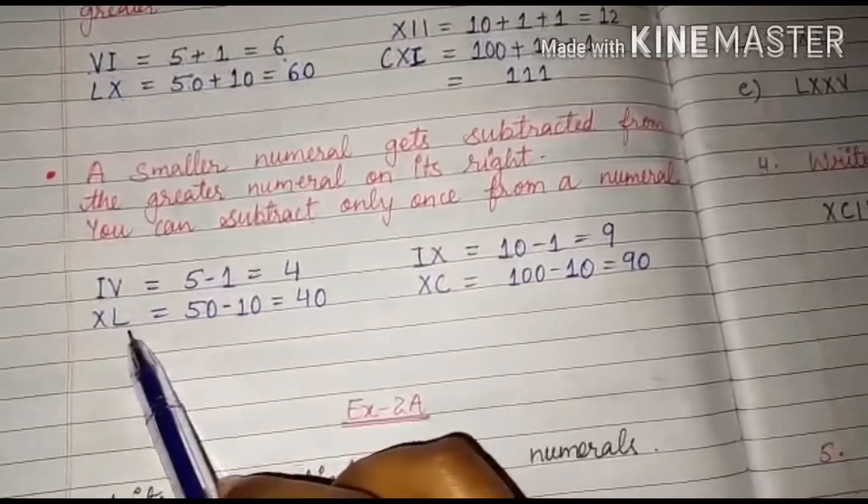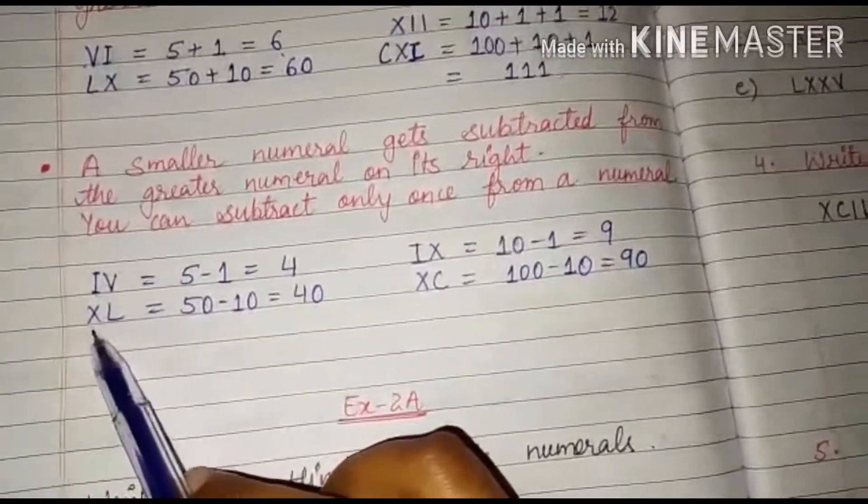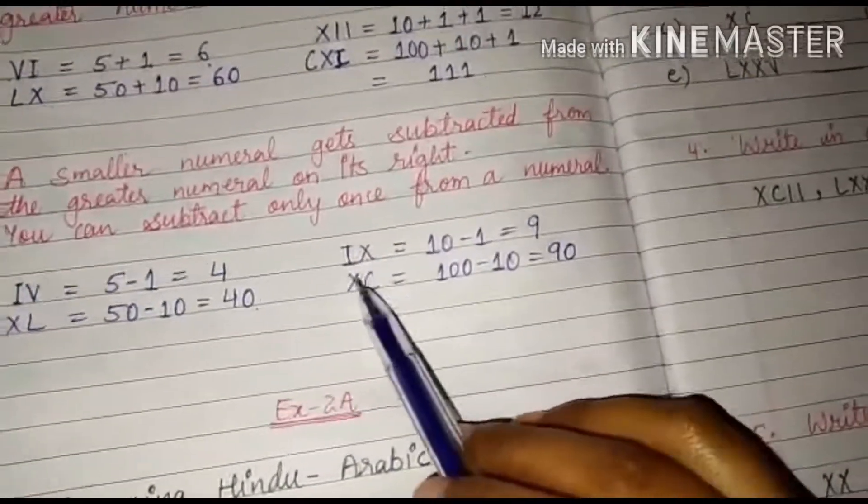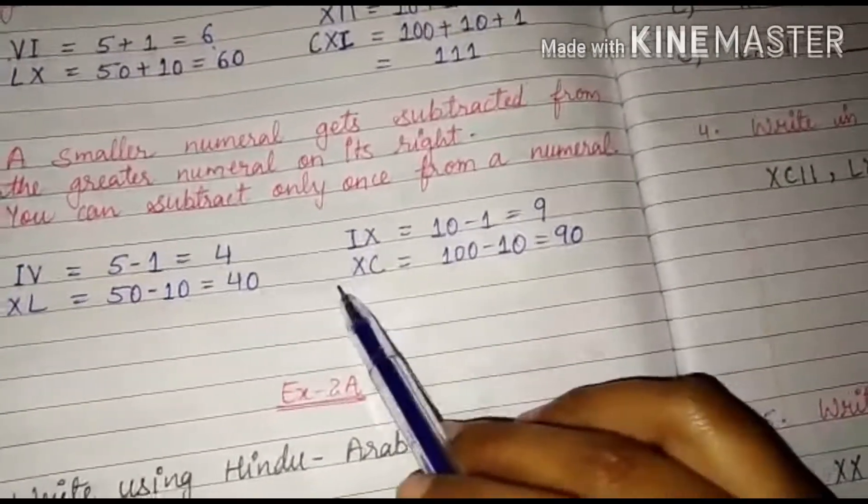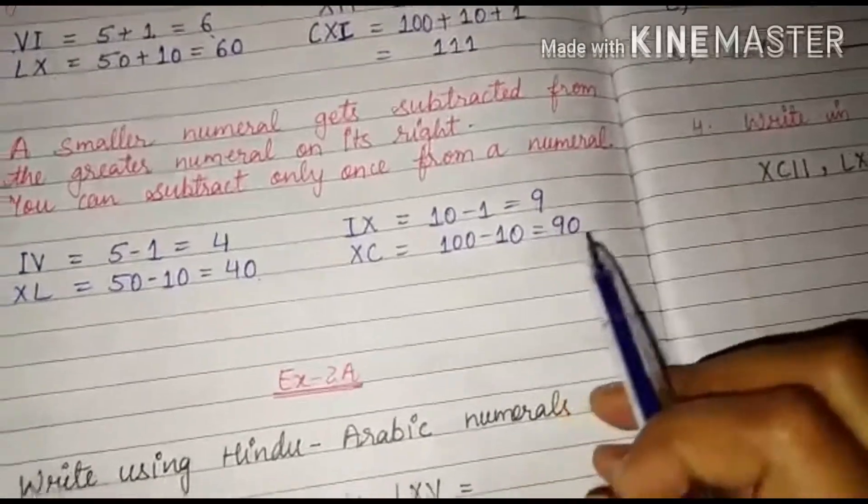XL. L is 50, 50 minus X. X is 10, 50 minus 10 will be 40. XC. C is 100, X is 10. So 100 minus 10 that is 90.